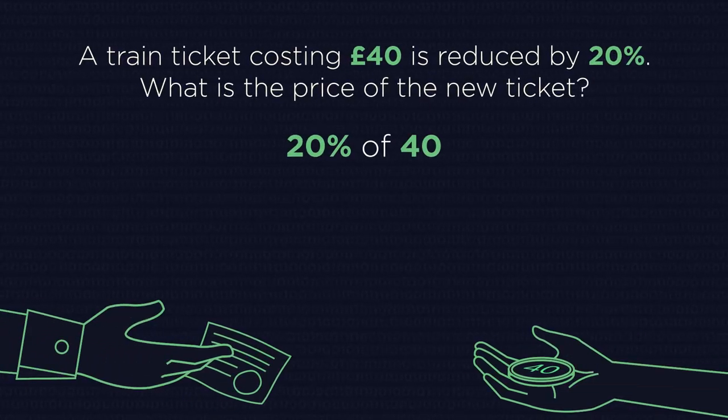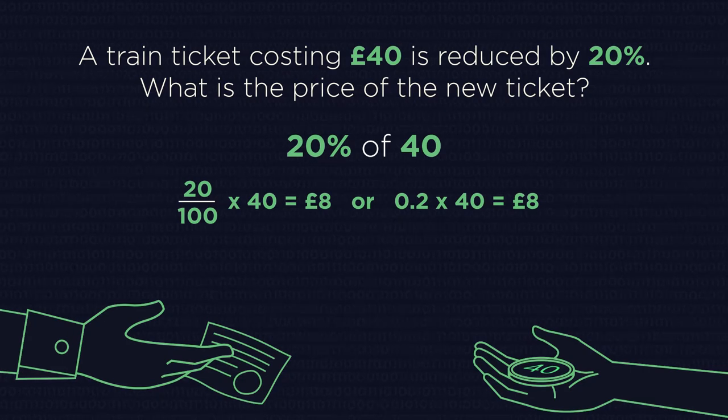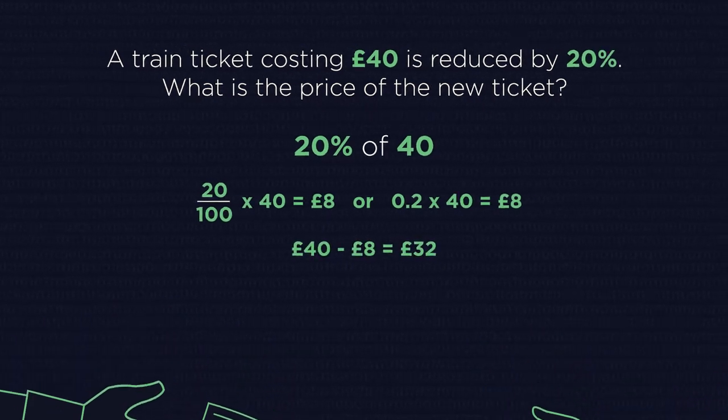We could find a percentage decrease like this by finding the amount and then subtracting it from the original, but there is a much faster way, especially if you have a calculator to hand. It's using multipliers.